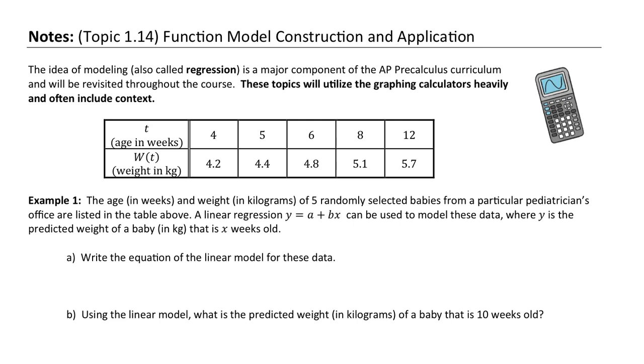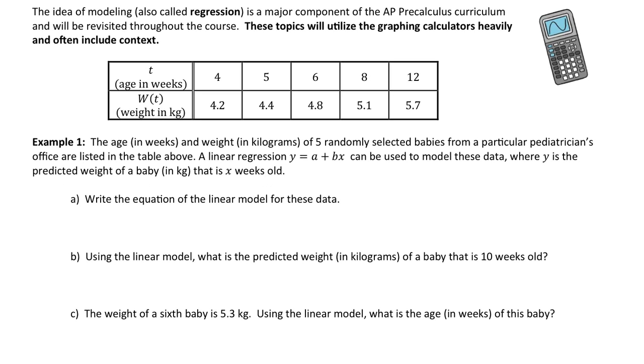This example one just jumps right into it. It says the age in weeks and weight in kilograms of five randomly selected babies from a particular pediatrician's office are listed in the table above. A linear regression, y equal to a plus bx, notice the order it's in, a plus bx, can be used to model these data, where y is the predicted weight of the baby in kilograms that is x weeks old.